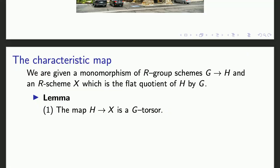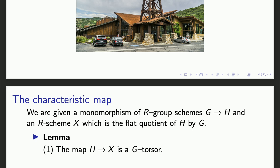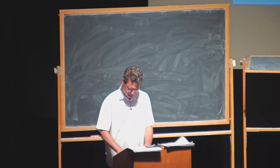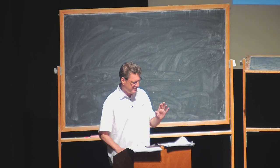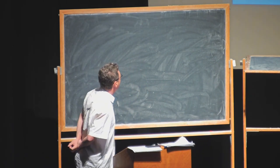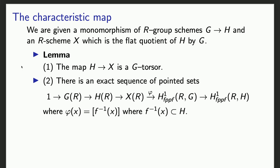We were given a monomorphism of group schemes — you can see G inside H — and in good conditions there is an R-scheme X which is a flat quotient of H by G. I explained yesterday what it is. This is an important example of torsors. The map from H to X is a G-torsor.